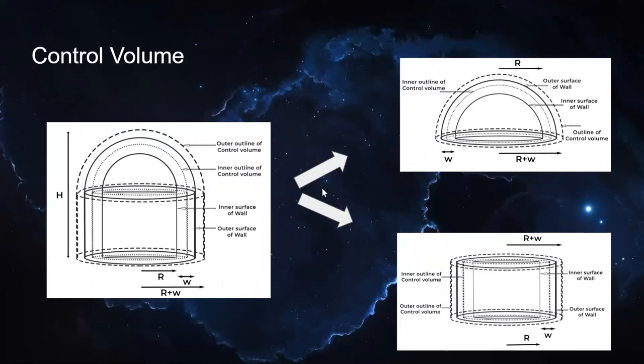Here are the pictures that fit the control volume we have considered for our problem. Since we couldn't solve the problem for this complex object, we further split it into two parts, a hemisphere and a cylinder. For both structures, the control volume is the outer wall through which heat is lost to the environment.